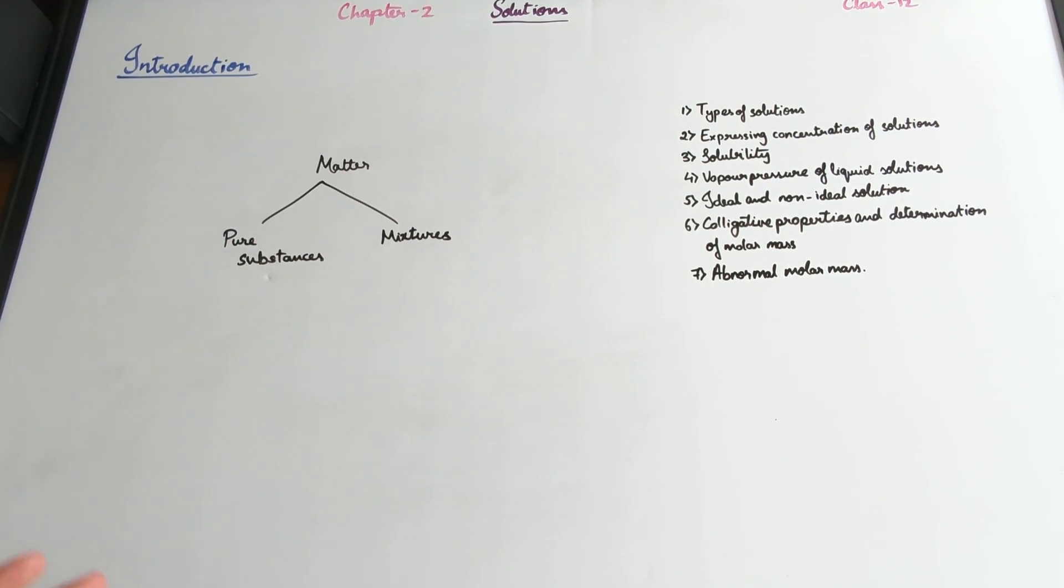In class 11, you learned that matter is not just divided as solid, liquids, and gases, but it's divided as pure substances and mixtures. Pure substances are the ones which have just one type of atom or molecule, and based on that, it was further divided into elements and compounds.